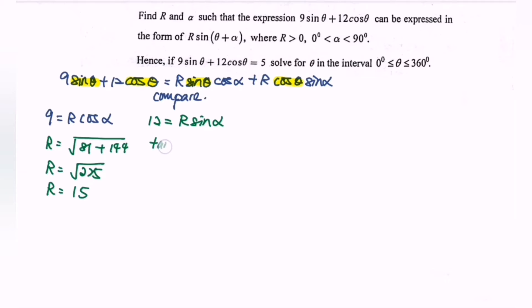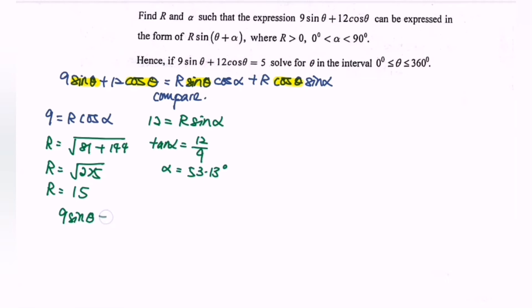Next is to find α, where tan(α) = sin/cos = 12/9. So finally α = 53.13°. Therefore 9sin(θ) + 12cos(θ) = 15·sin(θ + 53.13°).